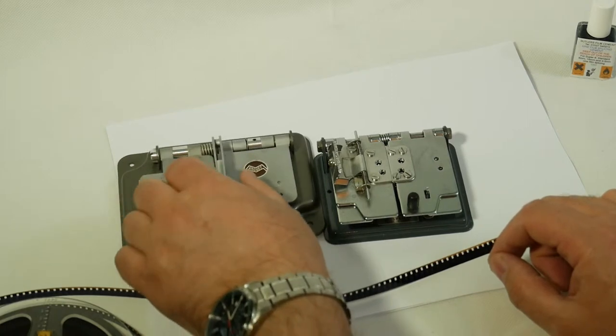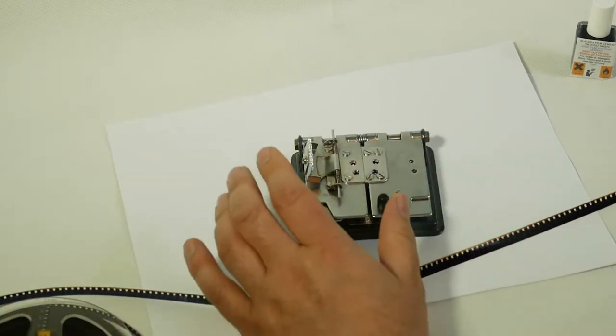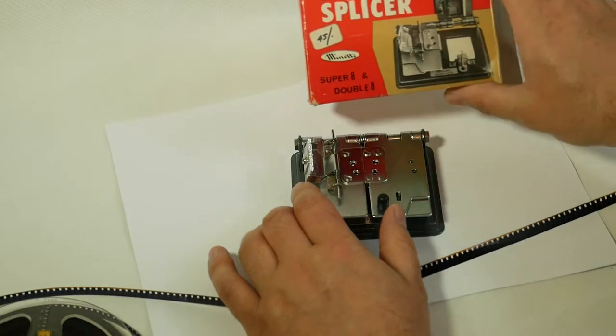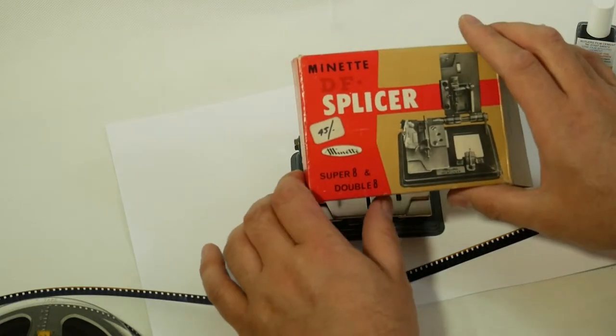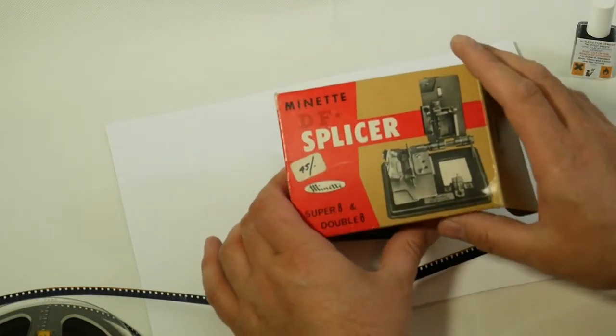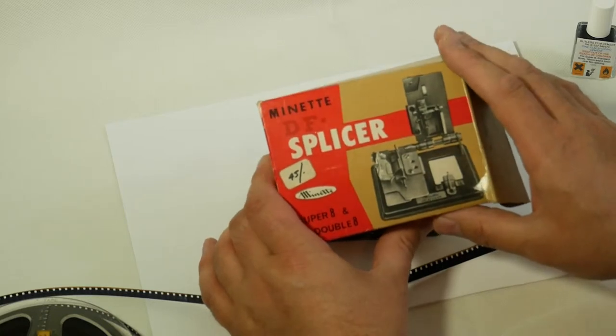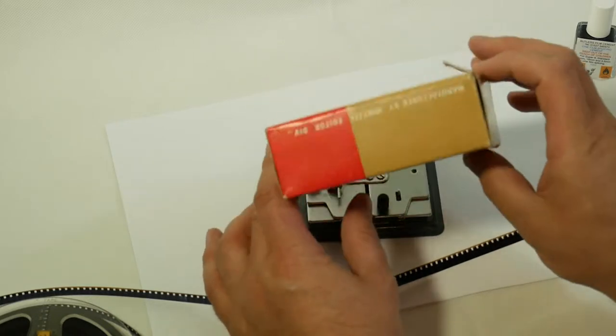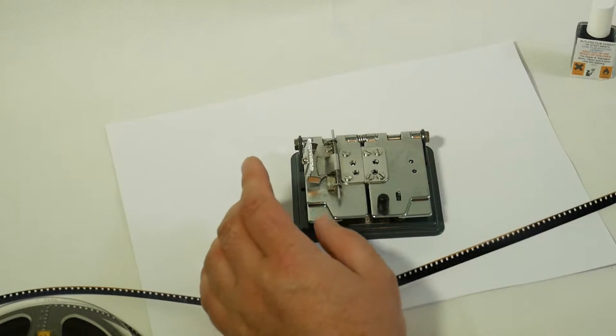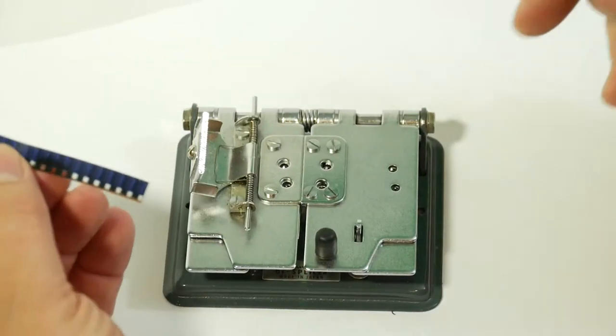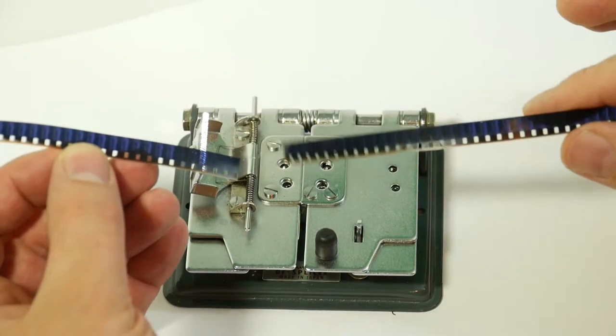Two examples here but we're going to look at this splicer today which is a Minette double 8 and super 8 splicer. So this one does standard 8 and double 8 super 8. We're going to show how to use that splicer with the cement. I'll show you how to do a splice by joining two pieces of film together.